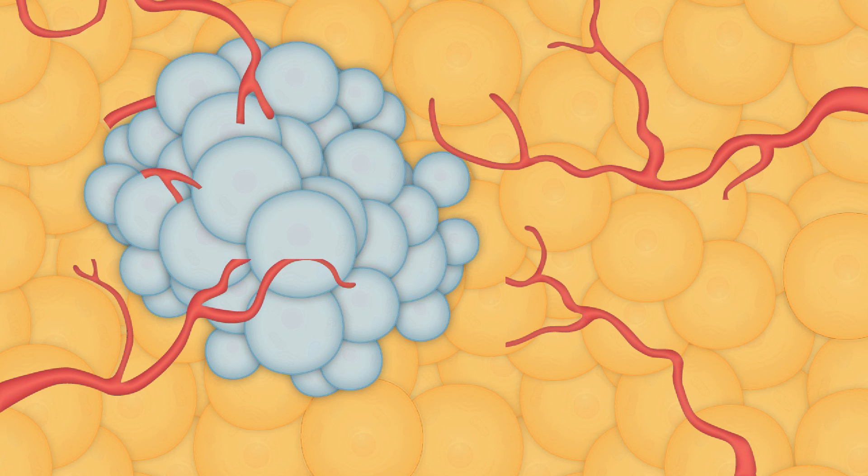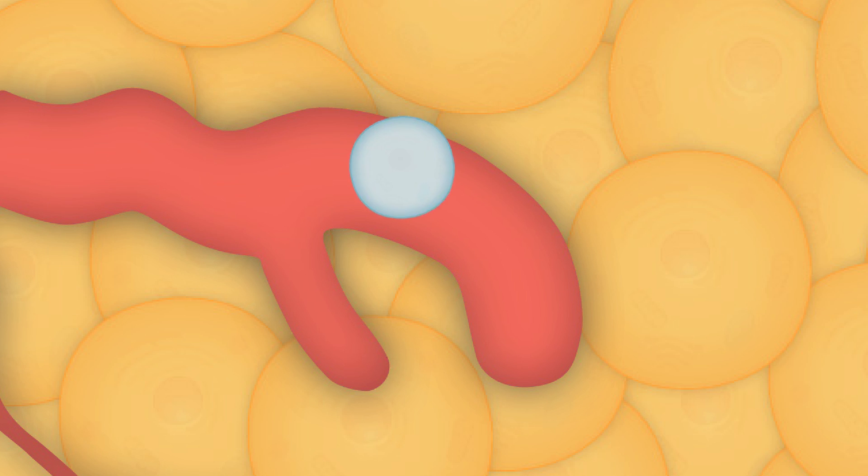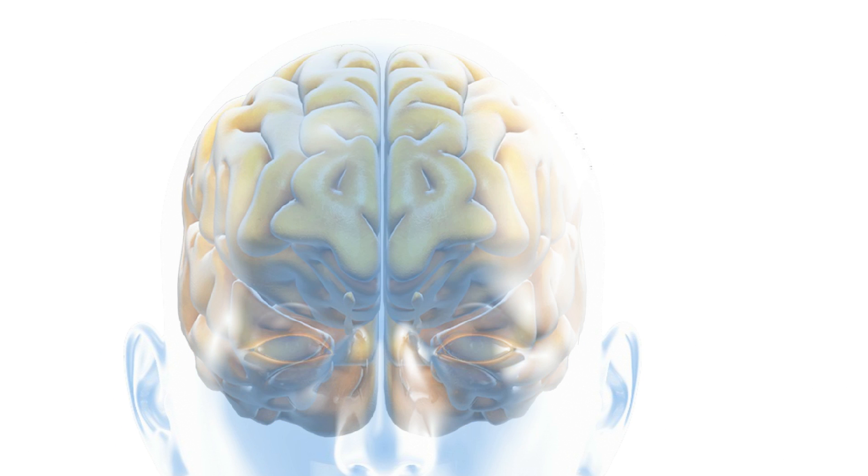New tumor blood vessels are formed to supply the tumor with nutrients. A critical phase is reached when the malignant cells penetrate into the circulatory system and establish colonies in other parts of the body.